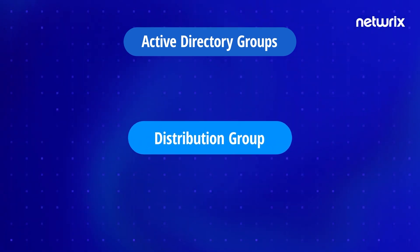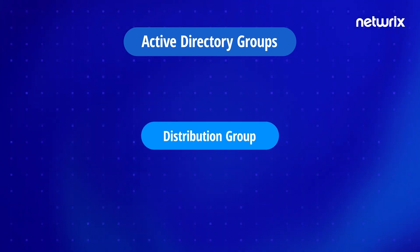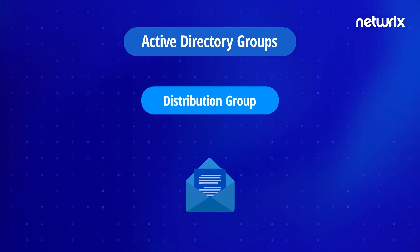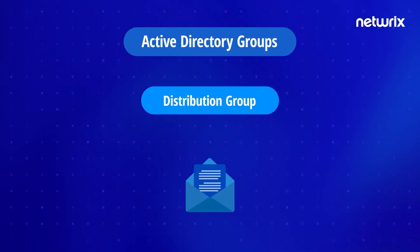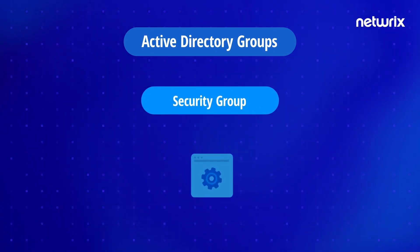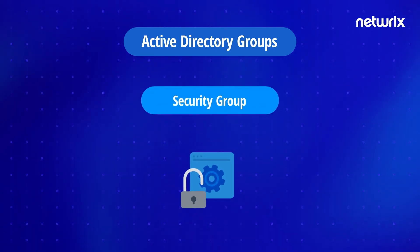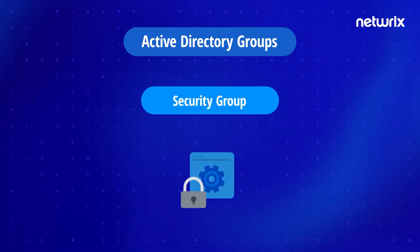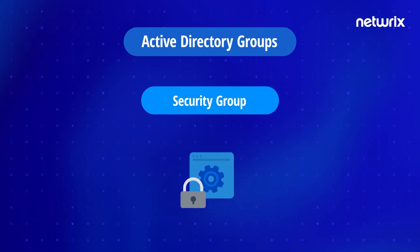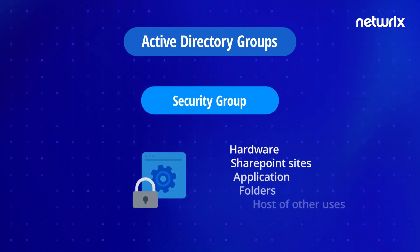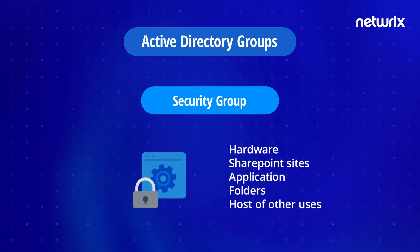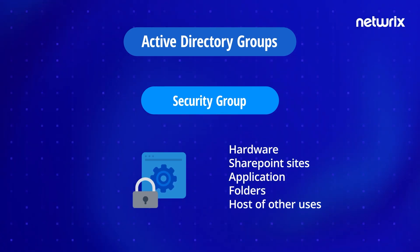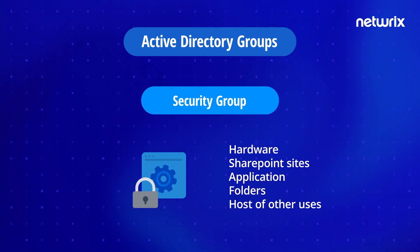Active Directory distribution groups work with your email client to define who is included on group messages, while security groups are used to control access to resources. Those resources could be hardware, SharePoint sites, application folders, or a host of other uses.